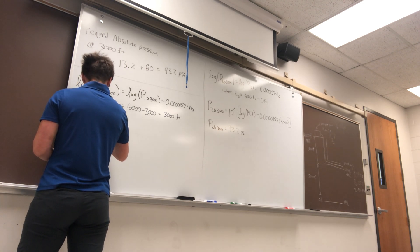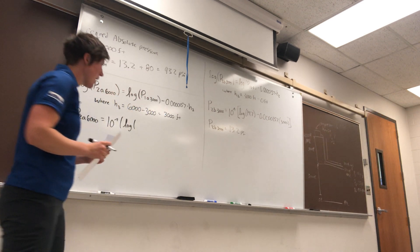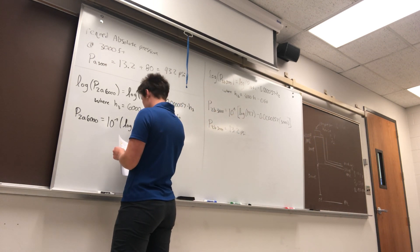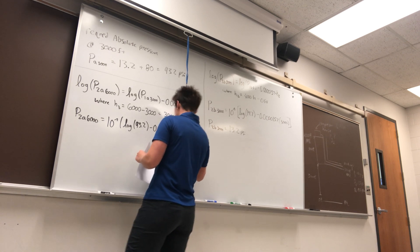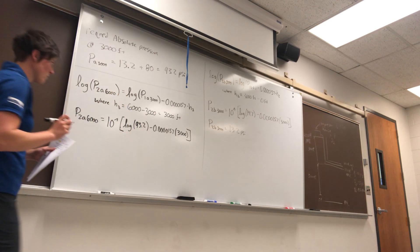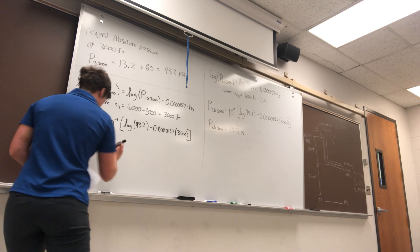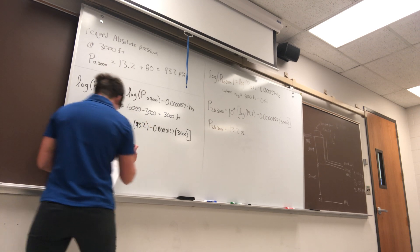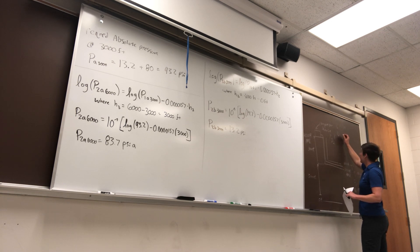Pressure two absolute at the 6,000 level equals 10 to the power of log of 93.2 minus 0.0000157 times 3,000. So far so good? Good. If we solve that, we get 83.7 PSI absolute. So we've got pressure absolute up top at 83.7 PSIA.